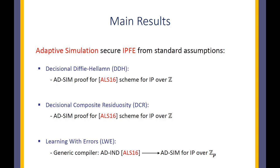In the case of inner product functional encryption schemes, adaptive simulation security seems to be the strongest possible notion that we can hope for. Our first two results give new security proofs for the Agrawal-Libernes-Tele scheme from 2016, showing that it satisfies a stronger security notion than previously known. The last result shows a generic compiler that gives adaptive simulation security from adaptive indistinguishability when inner products are computed modulo a prime. In particular, we can apply this transformation to the ALS16 LWE-based scheme.